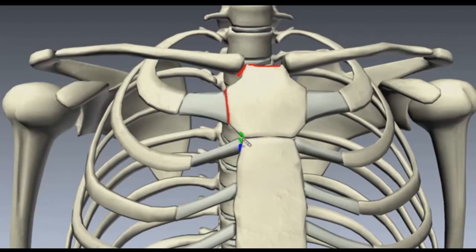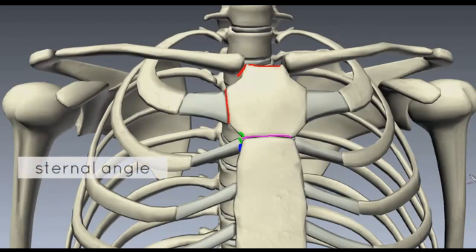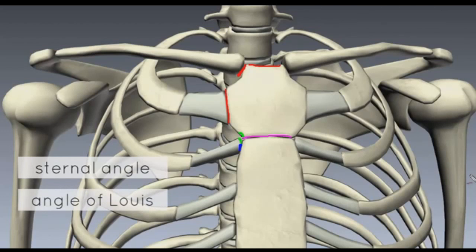Importantly, where the manubrium meets the body of the sternum, you get an angle called the sternal angle, also often called the angle of Louis, and it's an important anatomical landmark. There'll be another tutorial covering the important structures found at this sternal angle. The sternal angle lies at the level of the intervertebral disc between thoracic vertebrae T4 and T5.